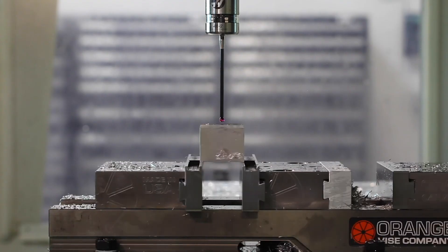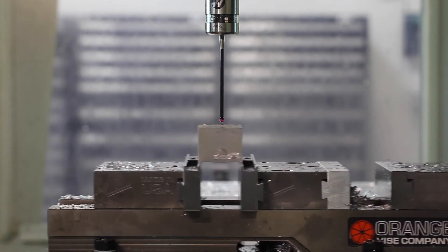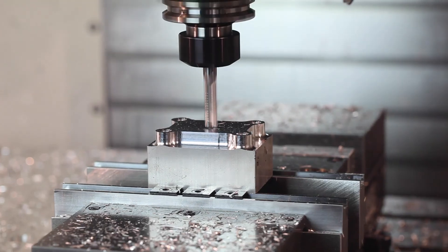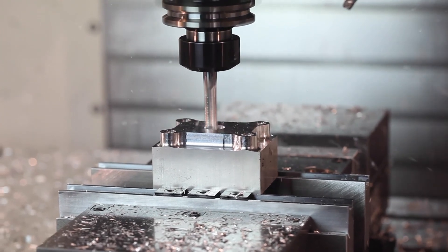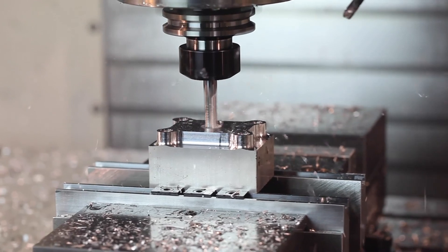For basic tolerancing, ISO 2768 medium is a good low effort choice to call out. Keep part size between 6 inches in the long dimension and 2 inches in the short dimension to reduce the amount of fixturing needed to hold your part.